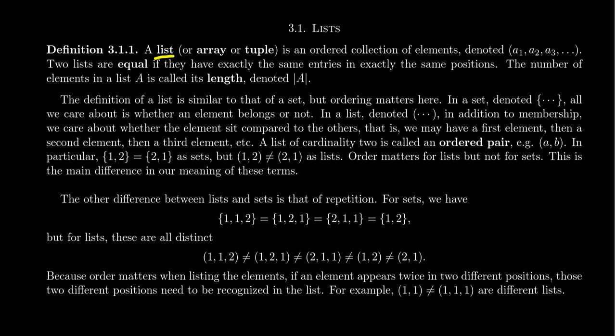In mathematics, a list — sometimes referred to as an array, particularly in a computer programming setting — is exactly what a computer programmer would refer to as an array. Sometimes it's called a tuple, an n-tuple, which would be like a triple or quadruple or something like that. This is just meant to be the generalization of that. A list is an ordered collection of elements. Unlike a set where order doesn't matter, a list is an ordered collection where the order matters.